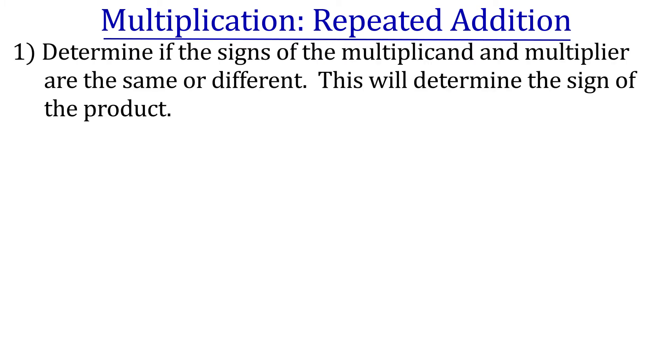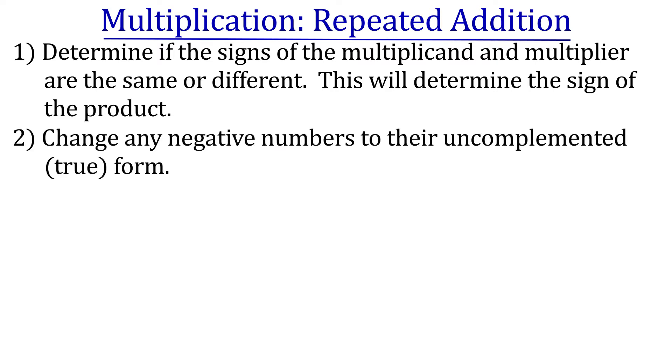Now, here are the steps to partial products in two's complement binary. First, determine if the signs of the multiplicand and the multiplier are the same or different. This will determine if the product is positive or negative. Step 2. Change any negative numbers to their uncomplimented form. Step 3. Generate the partial products just like you would in decimal.